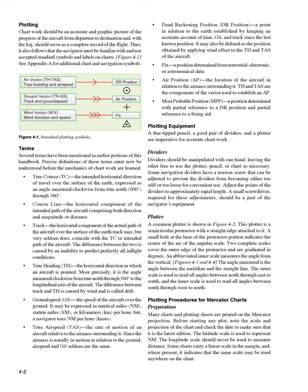Dividers should be manipulated with one hand, leaving the other free to use the plotter, pencil, or chart as necessary. Some navigation dividers have a tension screw that can be adjusted to prevent the dividers from becoming either too stiff or too loose. Adjust the points of the dividers to approximately equal length. A small screwdriver, required for these adjustments, should be a part of the navigator's equipment.